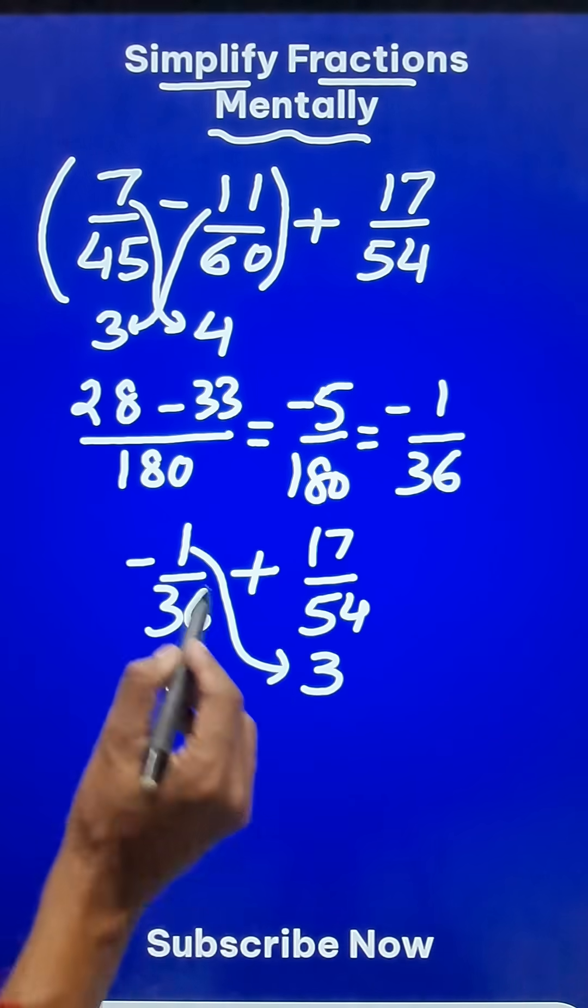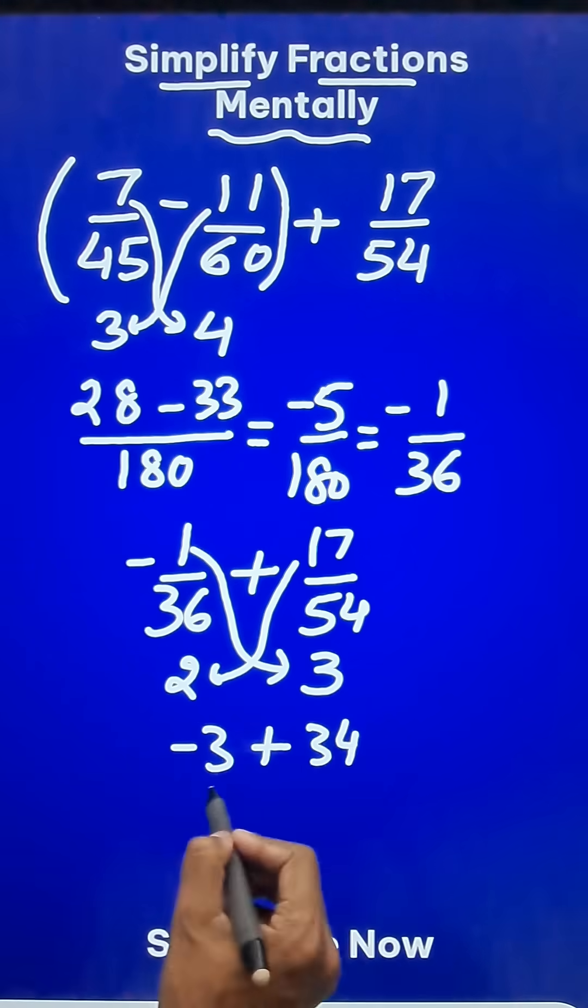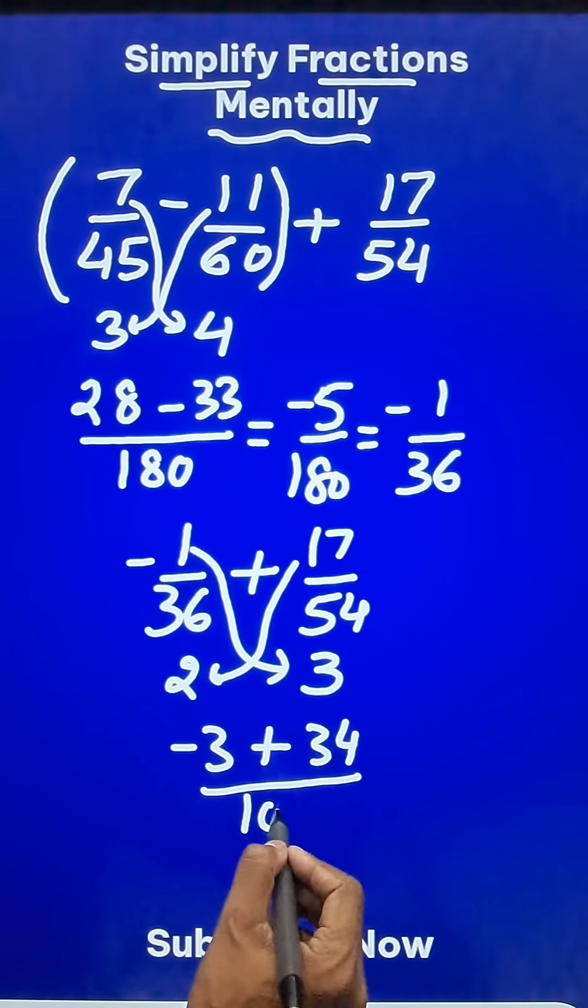So 18 times 2 is 36 and 18 times 3 is 54. Now go across like this minus 3 plus go across like this 34. And in the denominator take either 36 times 3 or 54 times 2. Both are equal to 108.